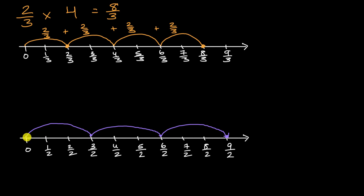Well, you could view that as three halves plus another three halves plus another three halves. Because notice, each of these jumps are three one halves or three halves. So you could view this as three halves plus three halves plus three halves.